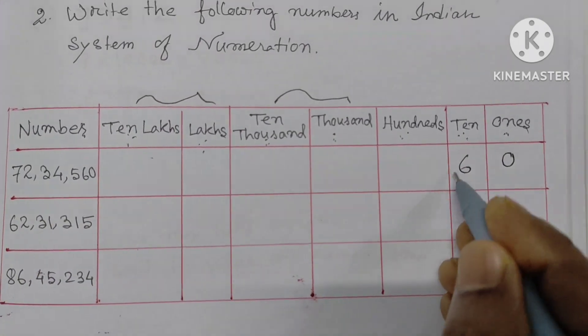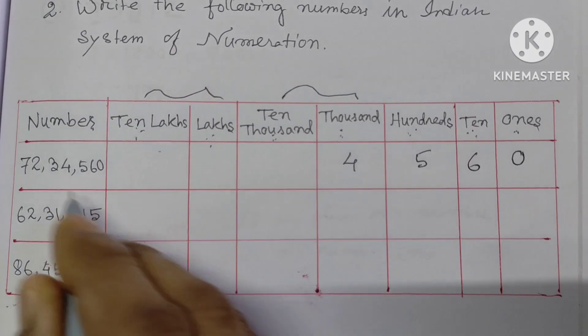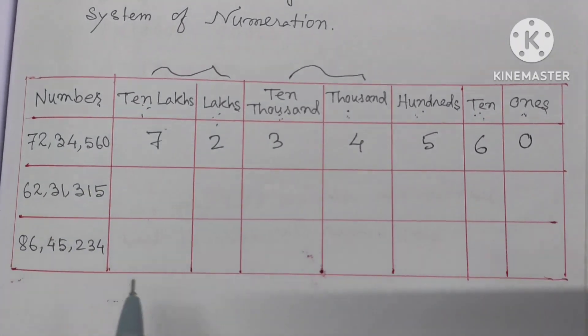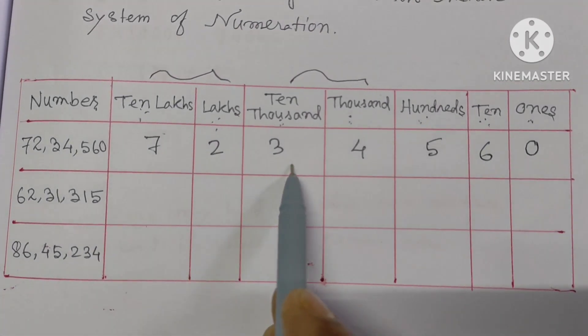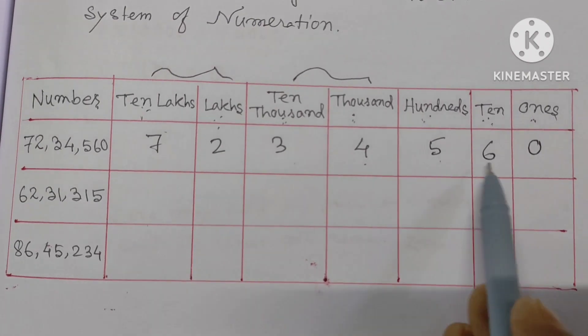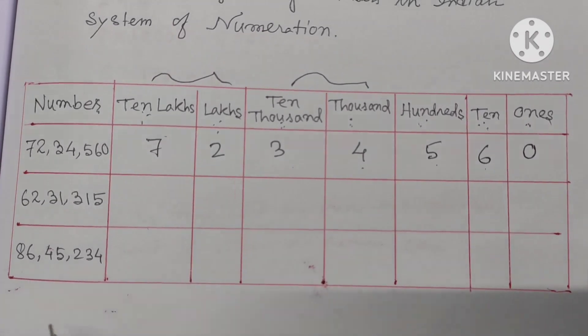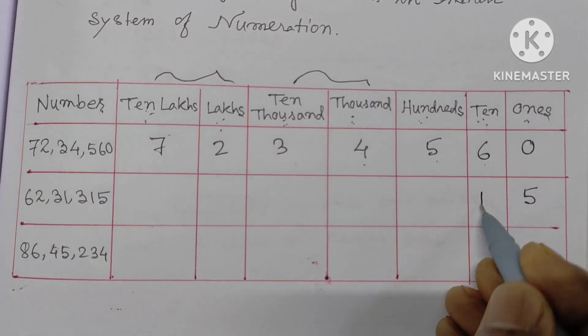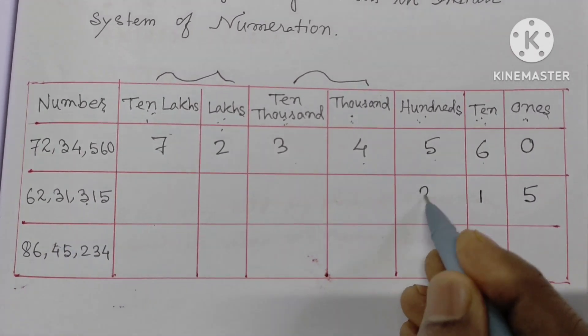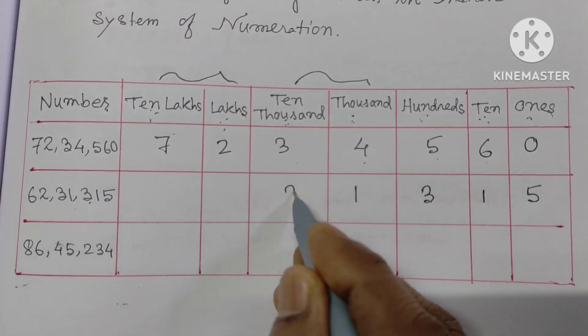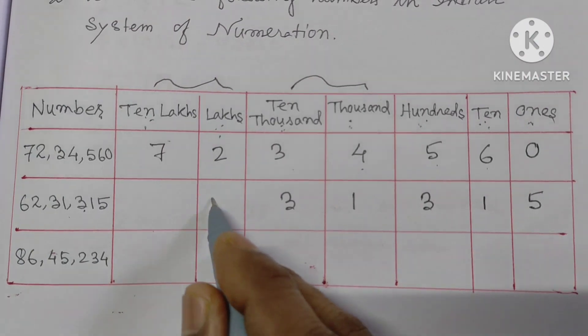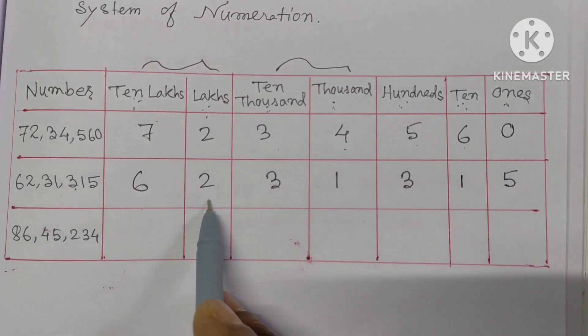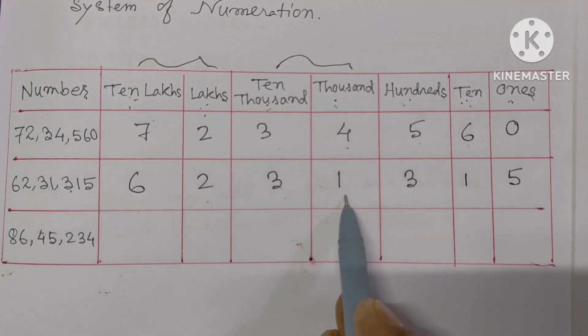Writing the digits: 6, 5, 4, 3, 7, making 72, 34, 560. Unit place 0, then tens place 6, hundreds place 5, thousands place 4, ten thousands place 3, lakhs place blank, ten lakhs place 7 and 2. That means 72 lakhs, 34,560.